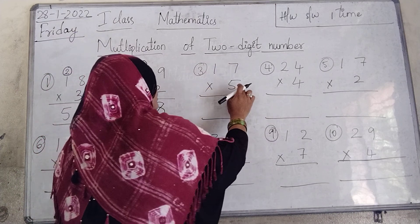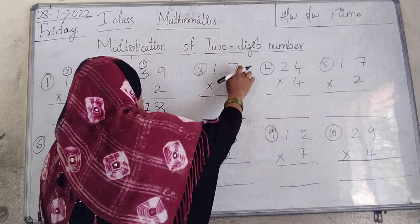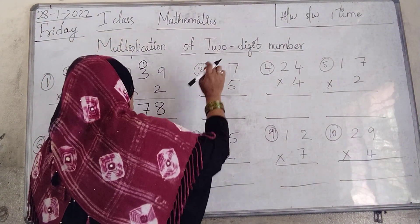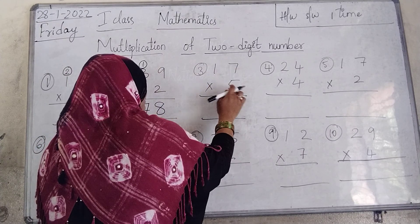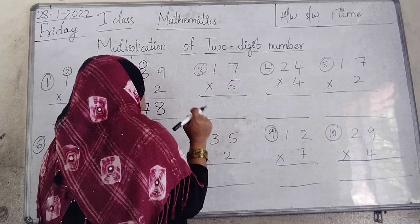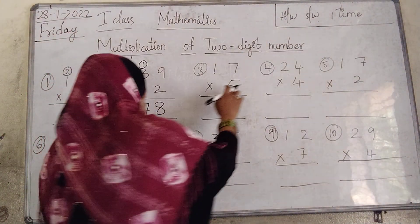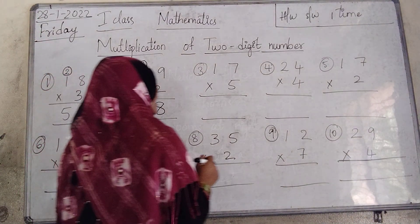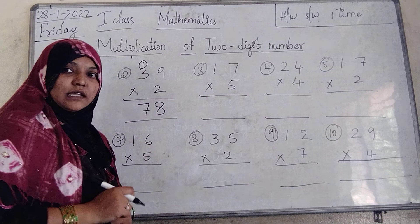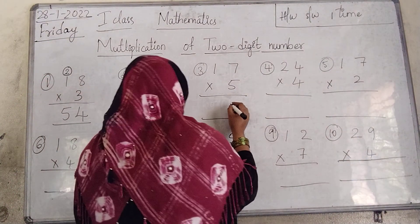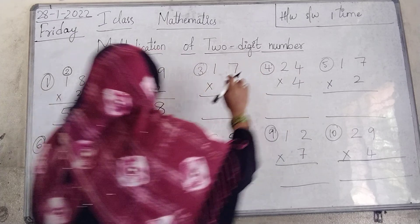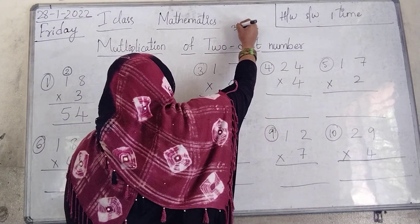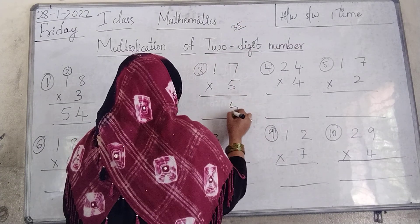Next: 17 into 5. Which number is there in the 1st place? 7. And in the 10th place? 1. We are multiplying 17 by 5. We have to use the 5 times table. 5 sevens are 35. Which number do we write in the 1st place? In 35, we write 5 in the 1st place.